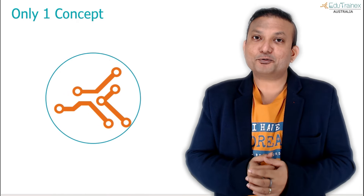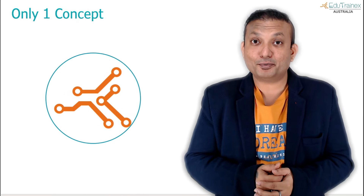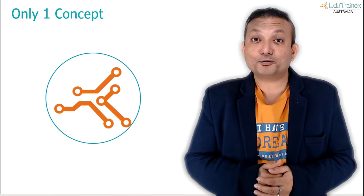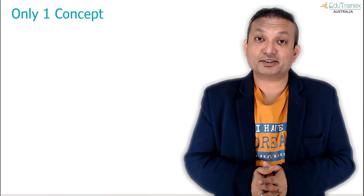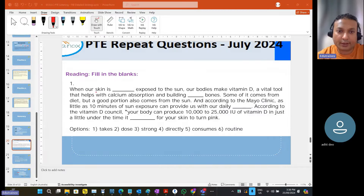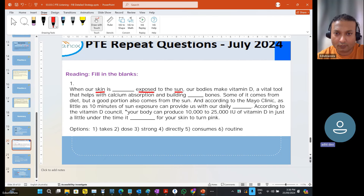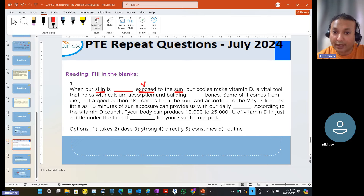I bring to you the one concept that will help you solve the problem. Let's look at one of the students doing so well with the exam questions. In the first sentence, skin is the subject, exposed is the verb, and sun is the object. Which type of word is closely associated with verbs? It's adverb. So how many adverbs do you see in the options?